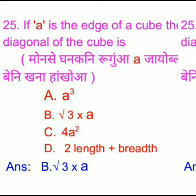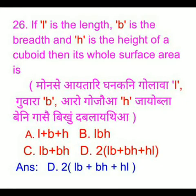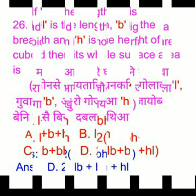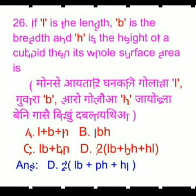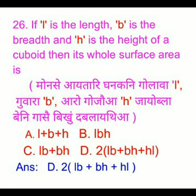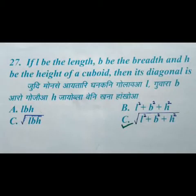the right answer is option B: root 3 into a. If L is the length, B is the breadth, and H is the height of a cuboid, then the total surface area is option D: 2(LB + BH + HL).